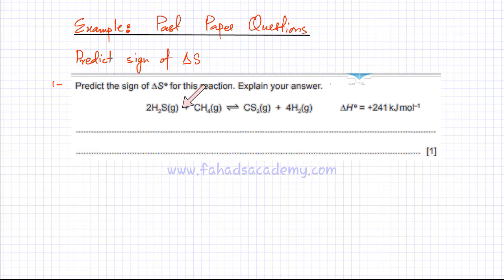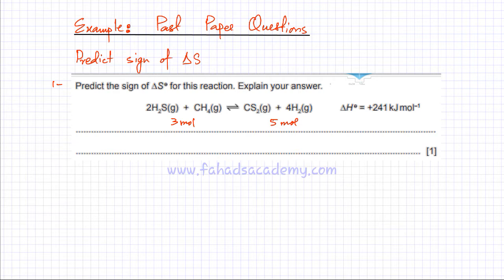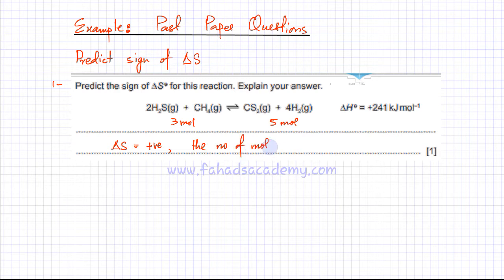If you look at this reaction, you would notice that all the particles are gaseous. In this reaction all the particles are in gaseous state and if you count the number of moles of gas, you would notice that there are a total of three moles of gas in your reactants, and in your products you have a total of five moles of gas. Since the amount of moles of gas is increasing — three moles in reactants producing five moles of gas — more gas is being produced, which means there is an increase in disorder and the sign of delta S is going to be positive.